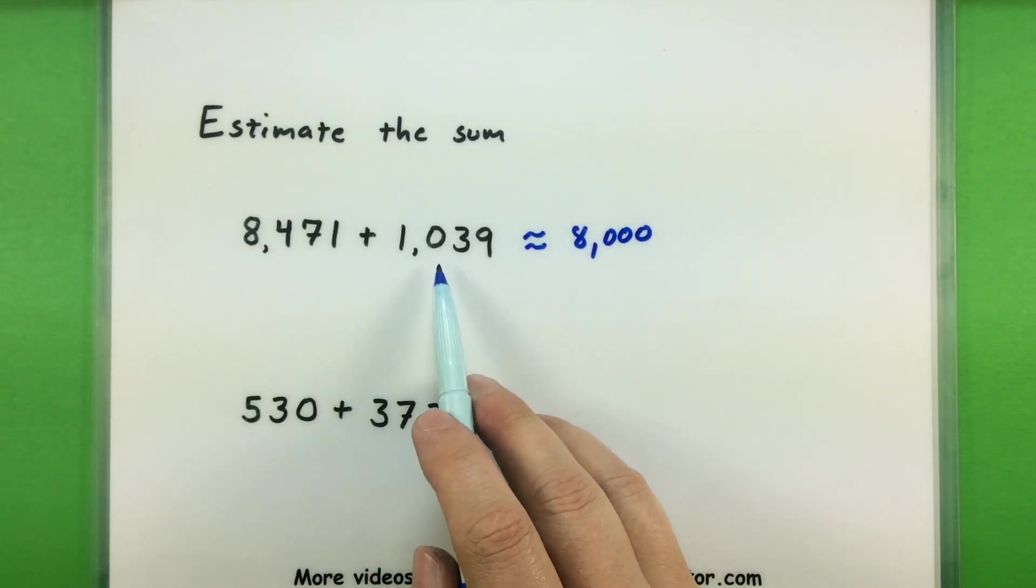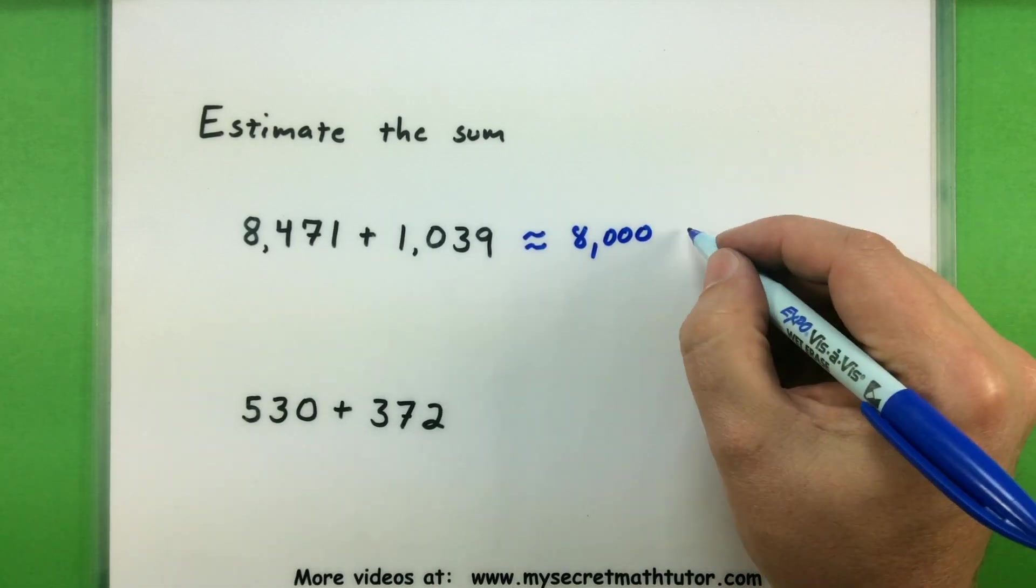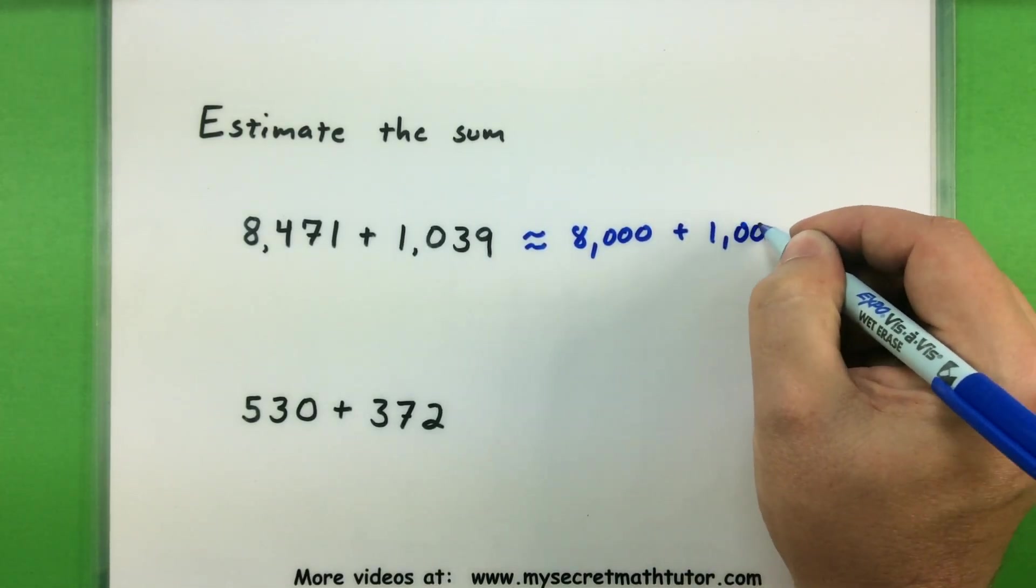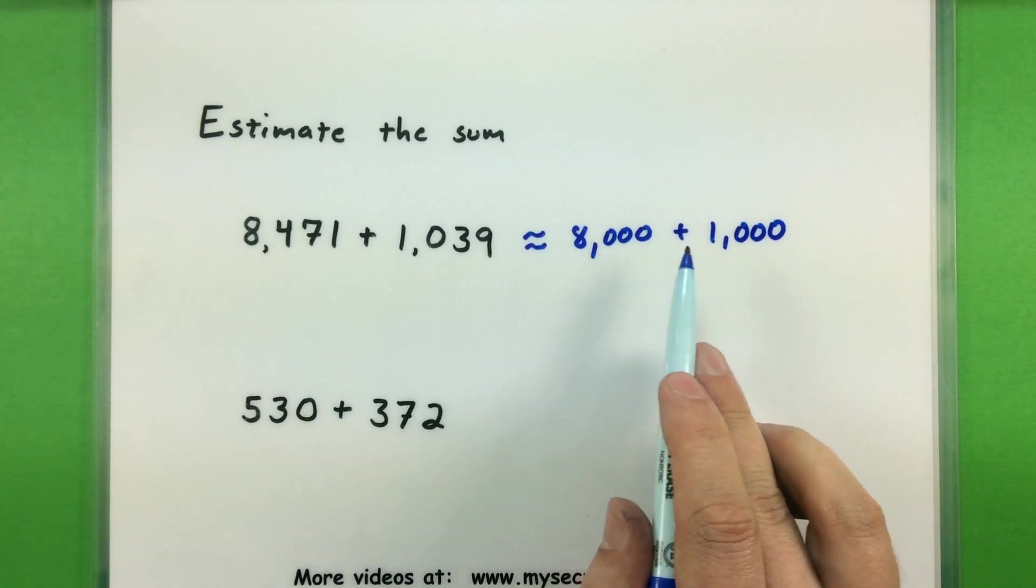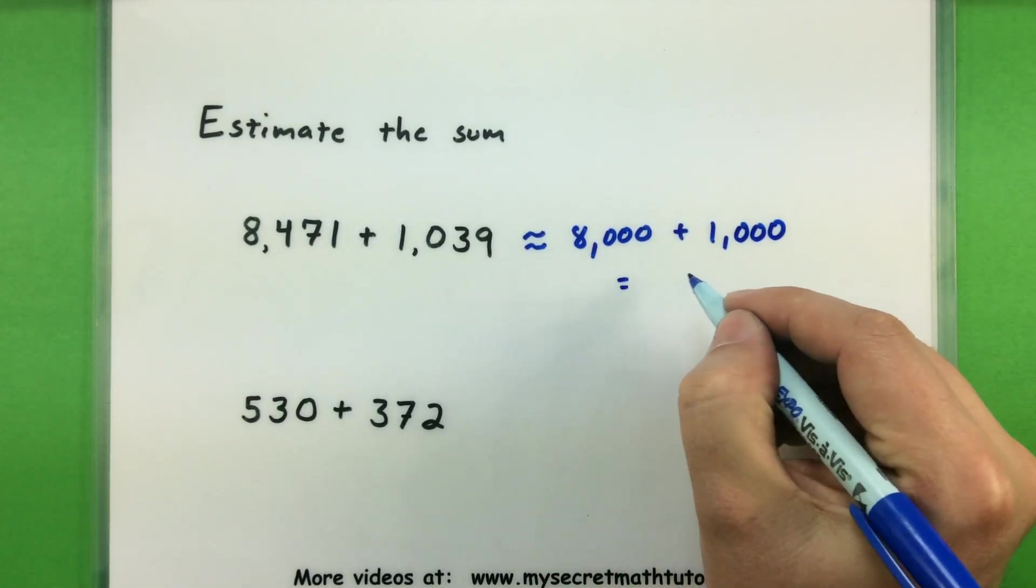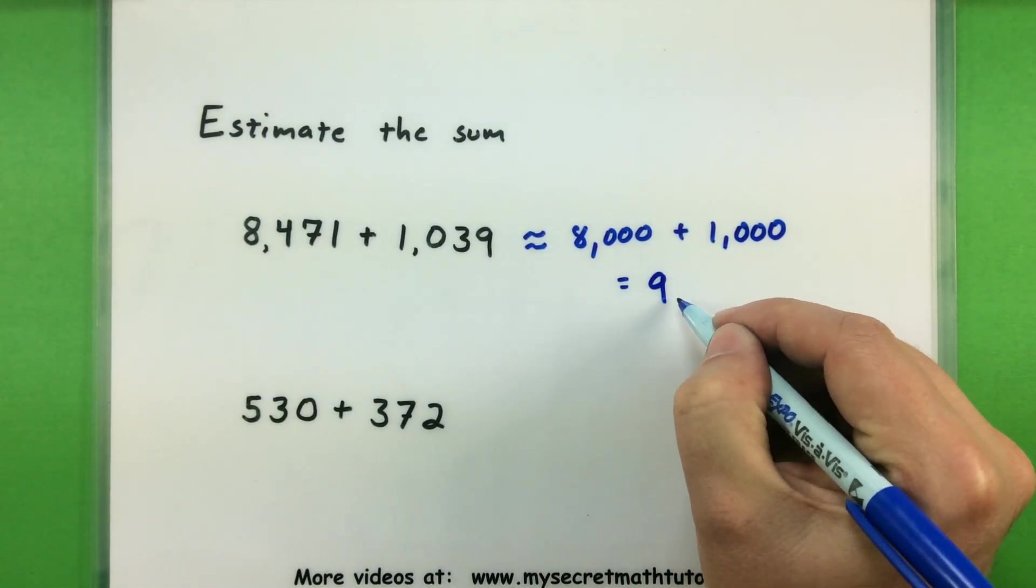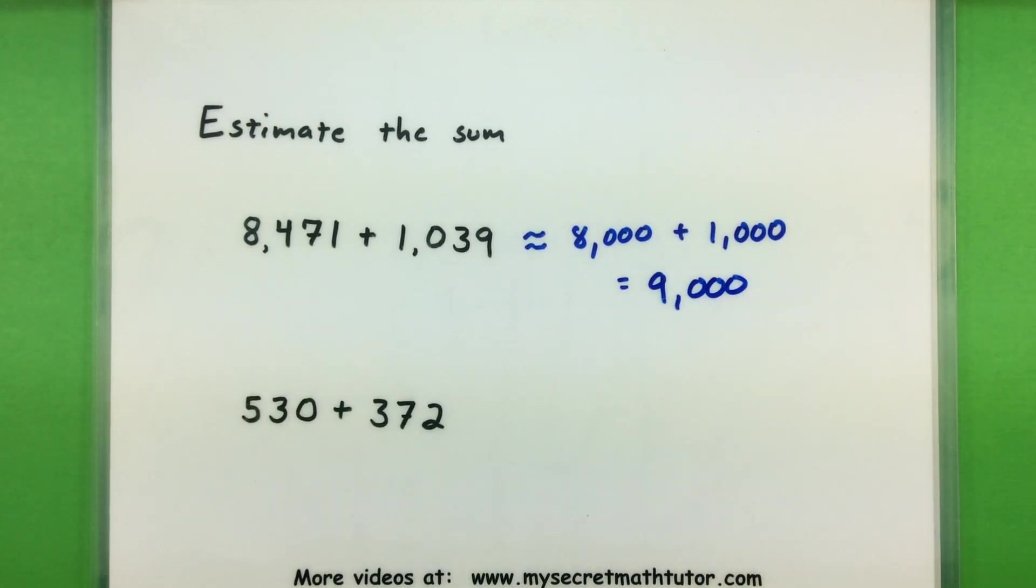This one is a one. The one right next to it is a zero. So this one gets rounded down to 1,000. And now I can add together the eight and the one. So I can get a 9,000 as my estimate.